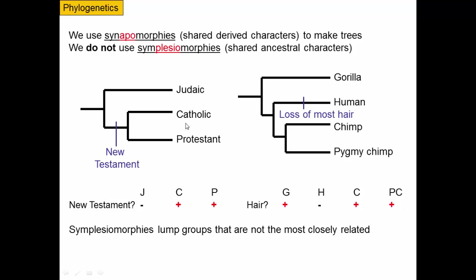In our little phylogeny of these religions, at some point in the history of these two religions, they acquired a trait we can represent as the New Testament. Judaism doesn't use this; Catholic and Protestant do. So this trait would correctly indicate that these two are more similar to each other and more distant from Judaism, reflecting their closer evolutionary history. That's a synapomorphy — a trait that arose later during the history and is shared by more than one taxon.